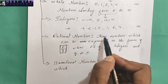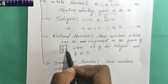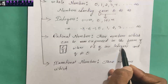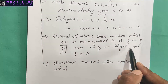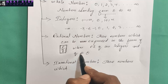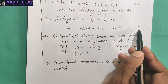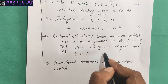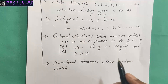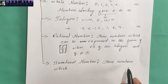After integers we have rational numbers. Rational numbers are those which can be expressed in the form of p by q, where p and q are integers — meaning negative, positive, or zero — but q should not be equal to zero. The denominator cannot be zero. Since rational numbers are in fractional form, we can also call them fractions.